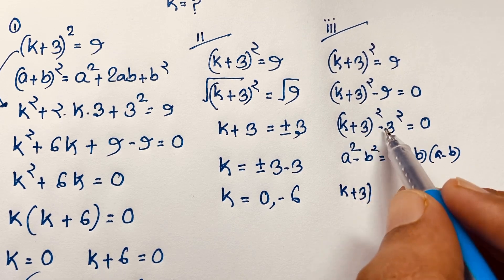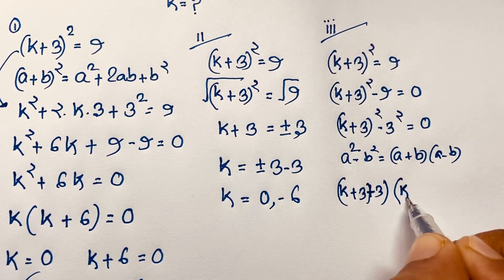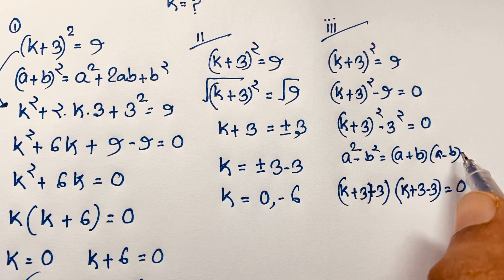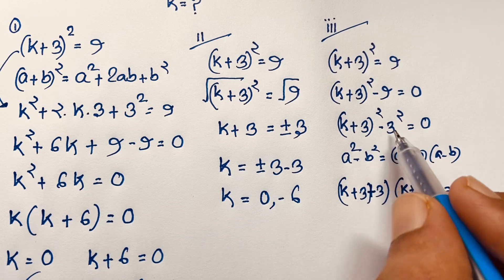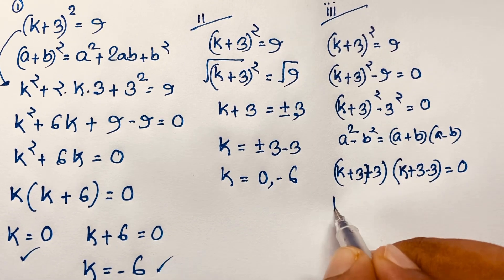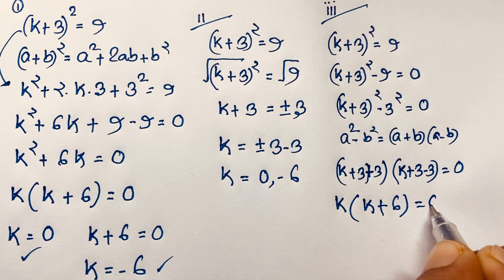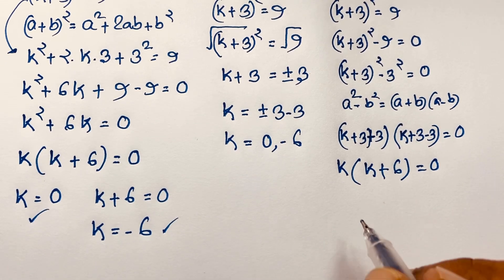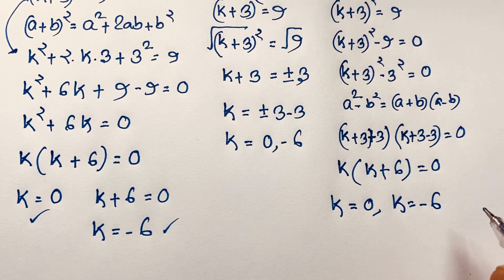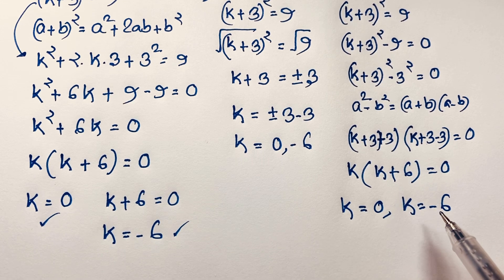Applying the difference of squares formula where a = (k + 3) and b = 3, we get (k + 3 + 3)(k + 3 − 3) = 0, which simplifies to (k + 6)(k) = 0. Therefore k = 0 or k = −6. So our final answer is k = 0 and k = −6.